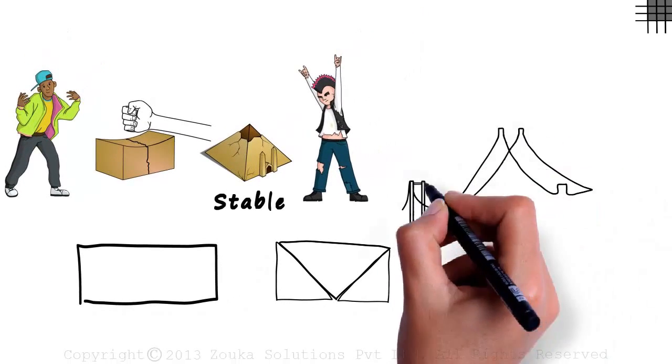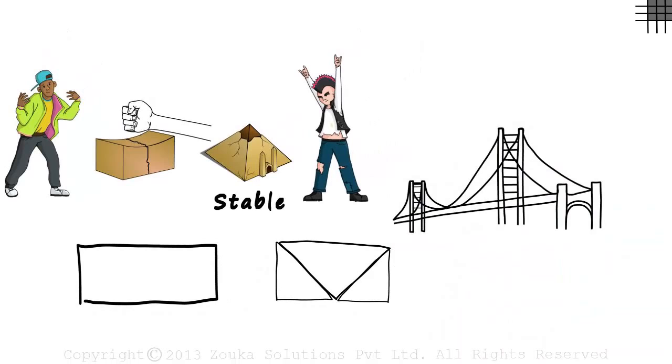Most of the bridges you see will have a triangular structure like this and helps it withstand the heavy downward force of the weights crossing the bridge.